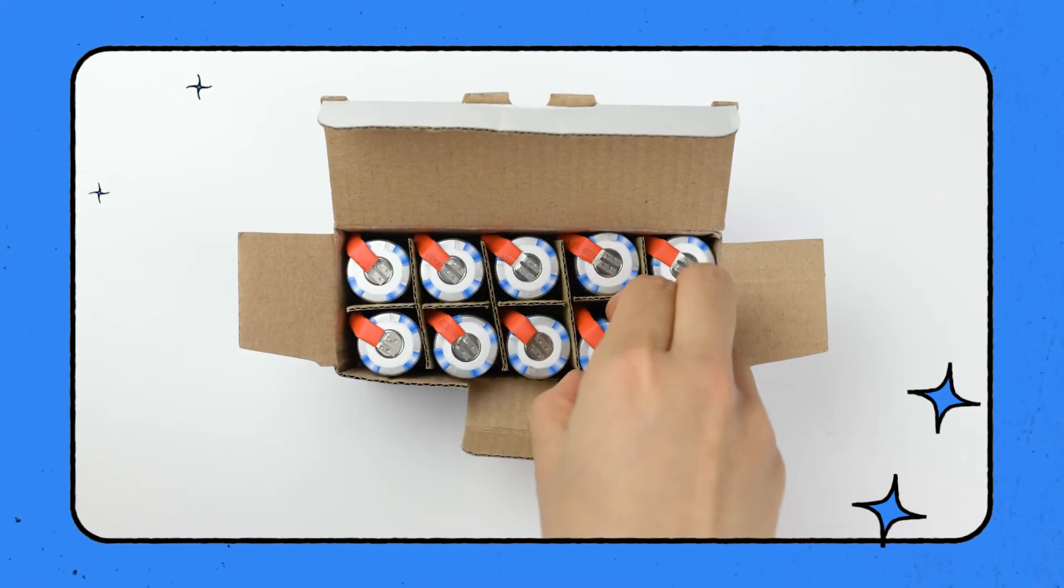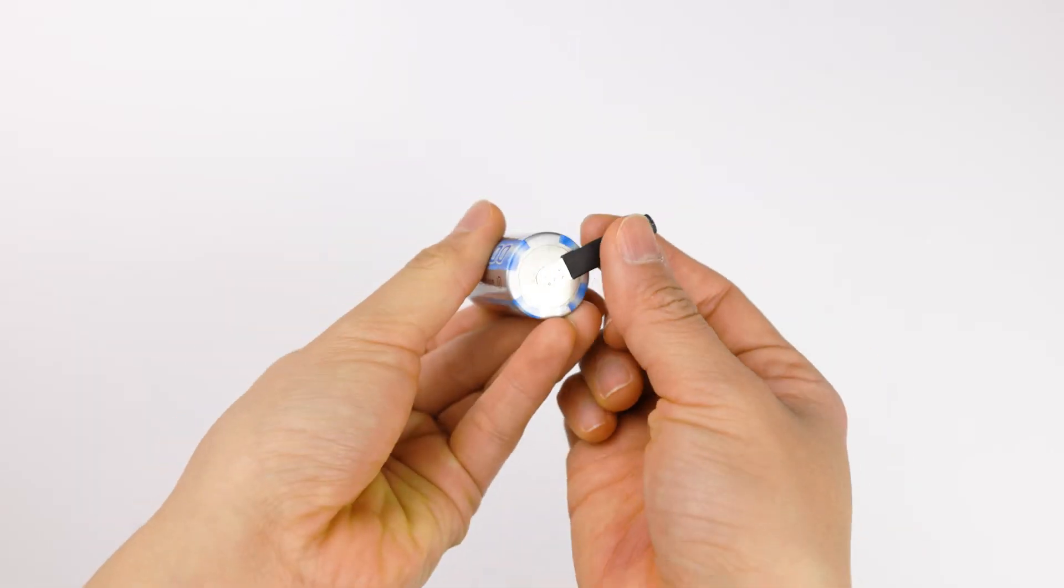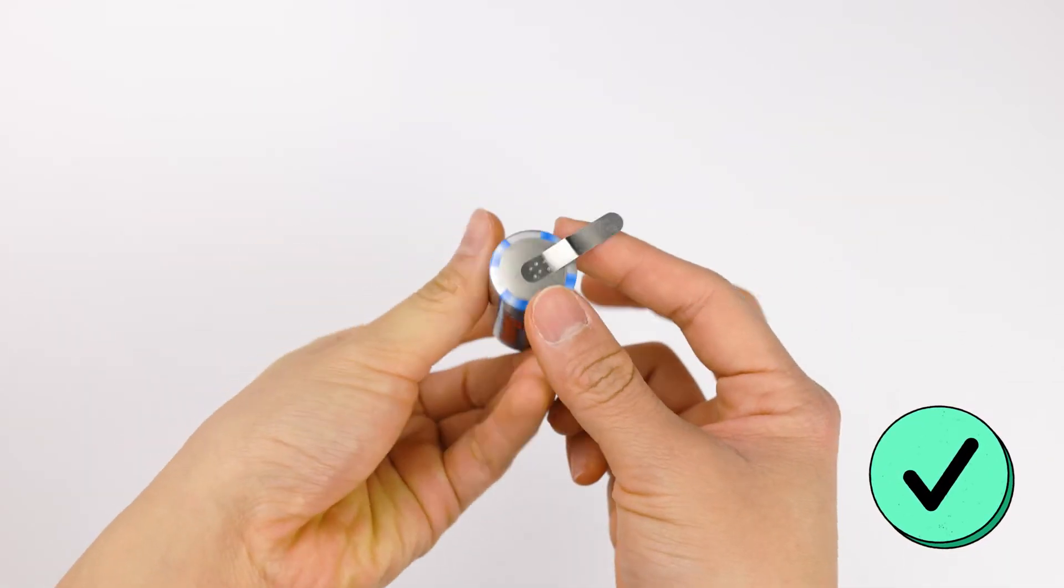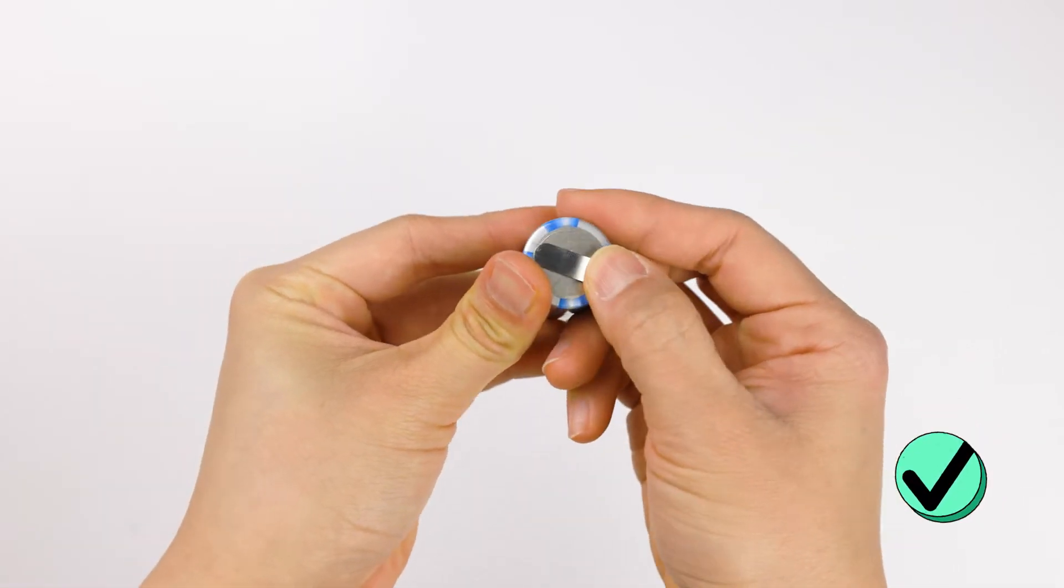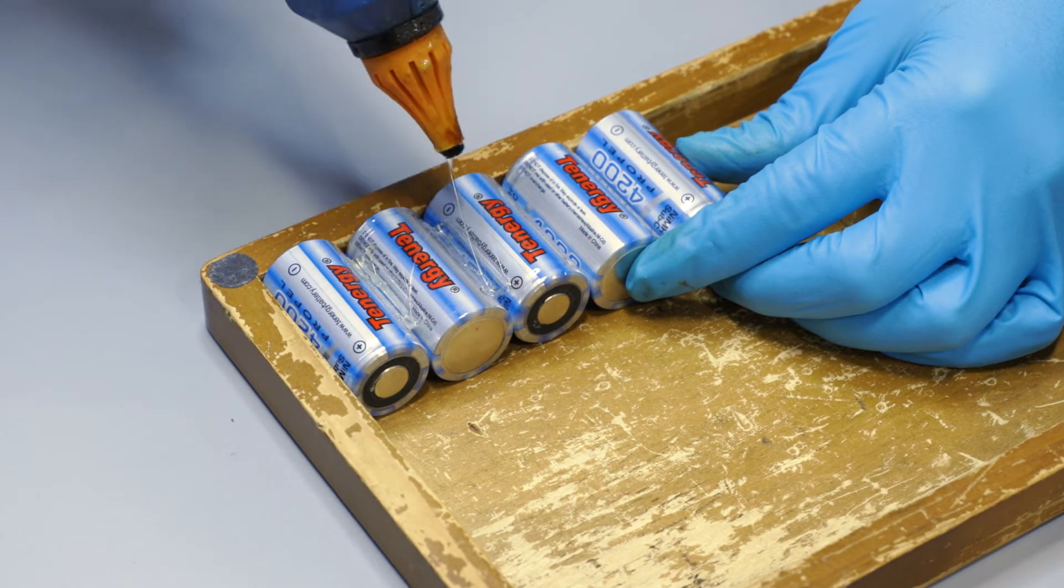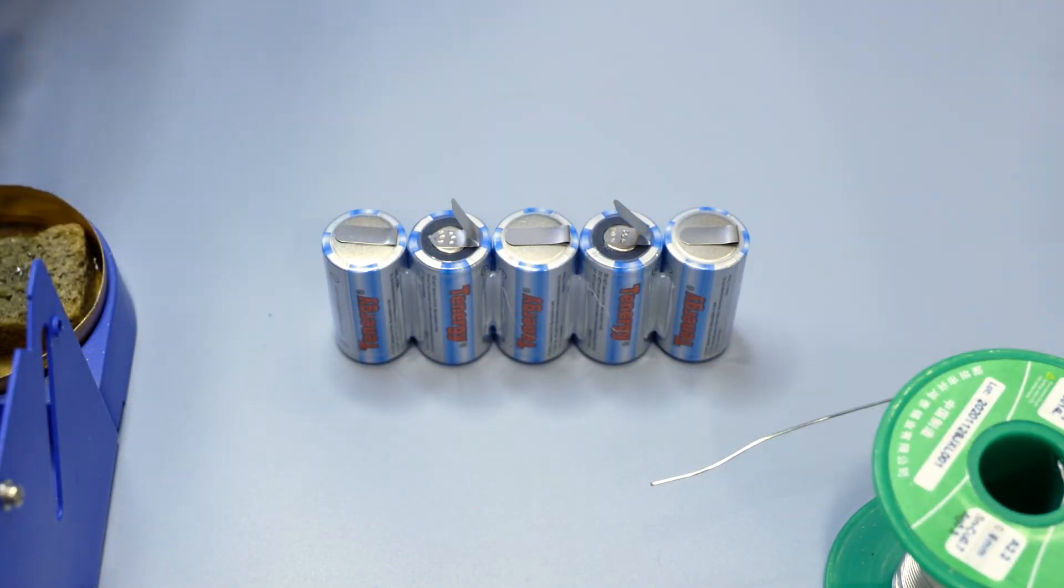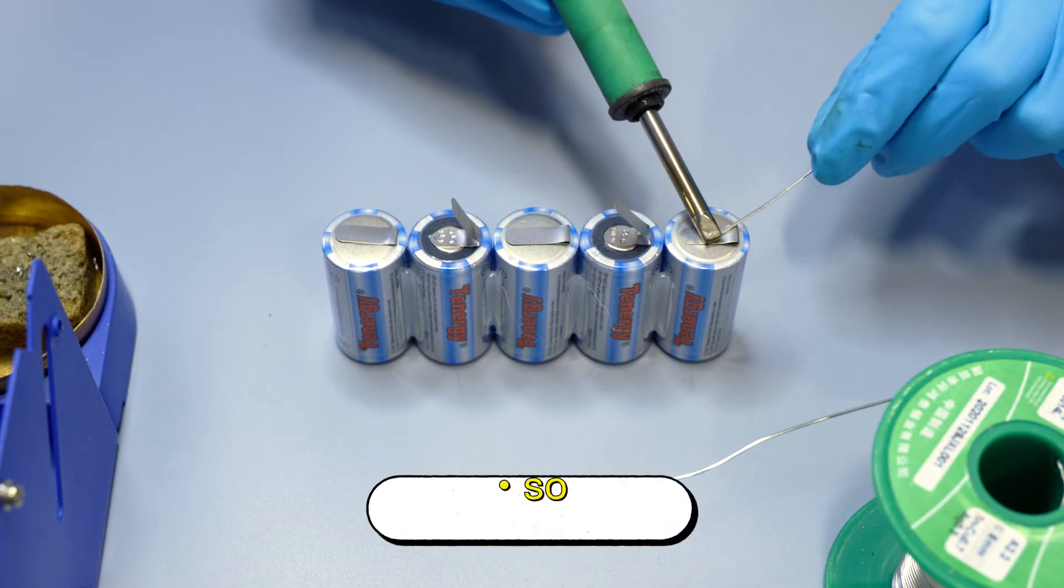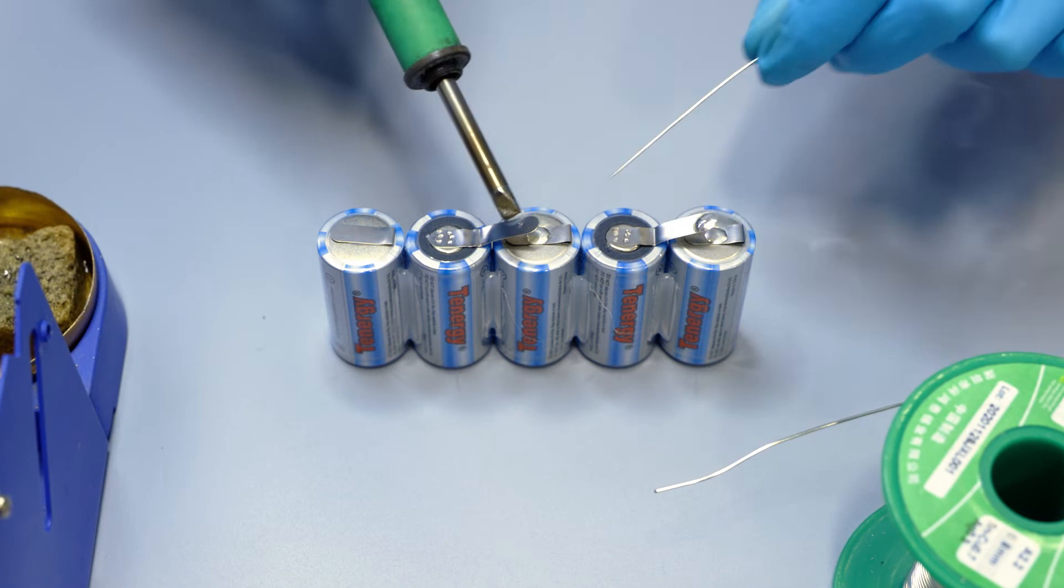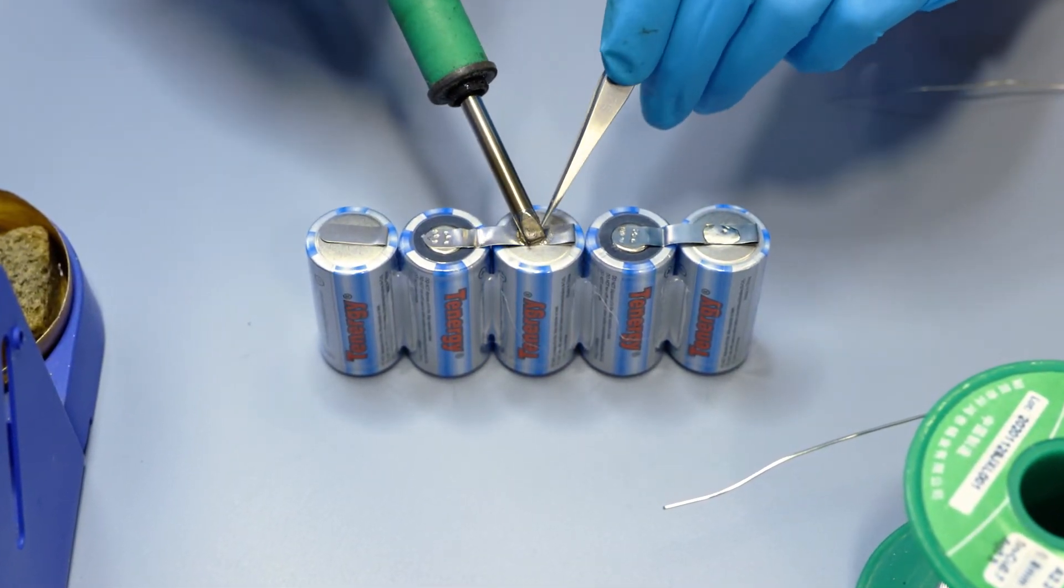One tip that we recommend when using this method is to buy cells that already have tabs attached like these, and before connecting, make sure to fold these tabs both on the top and the bottom to avoid unnecessary contact with other cells and prevent short circuits. Then place the cells in the right configuration and secure them using either a battery holder or hot glue. When connecting the cells, you need to unfold the tabs that are needed like this, and then solder them on instead of the cells directly. This will reduce the risk of exposing the cells to the heat. Depending on your skills and budget, you can choose which method you prefer.